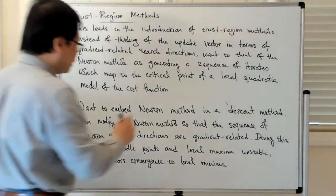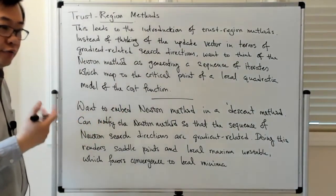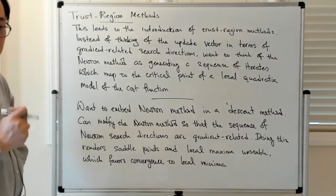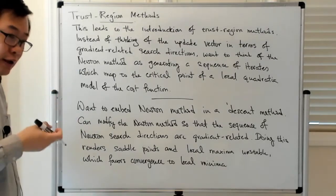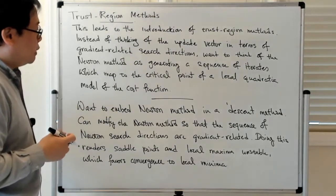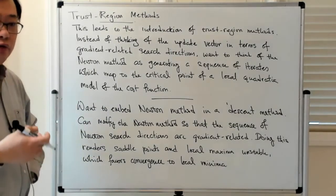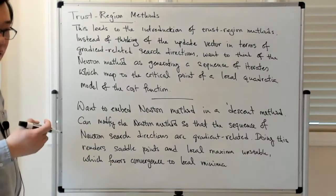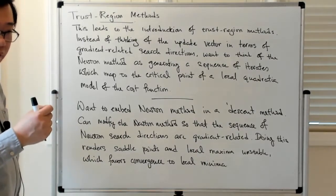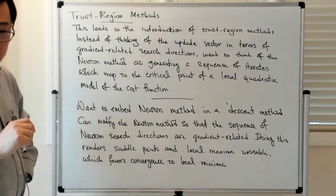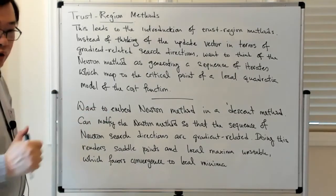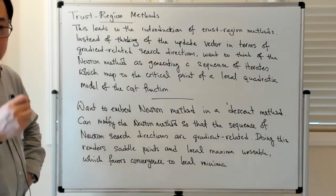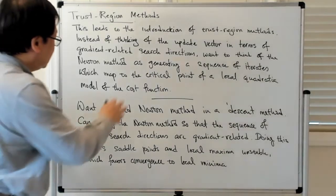When finding zeros of a function, Newton's method takes a first-order Taylor approximation and finds its zero. When that function is the gradient of a scalar-valued function, Newton's method corresponds to replacing the scalar function with a second-order Taylor approximation at that point and then going to the critical point of that quadratic function.